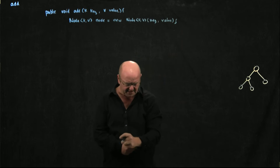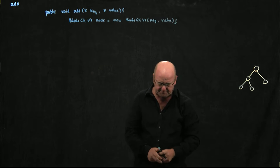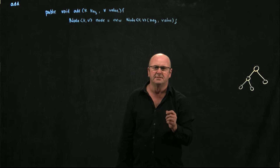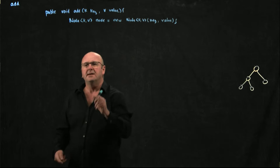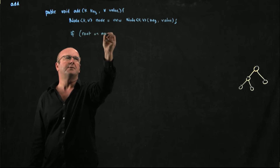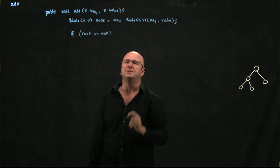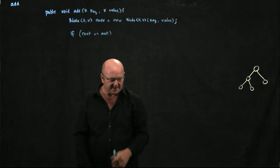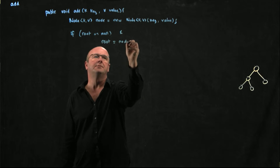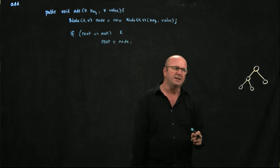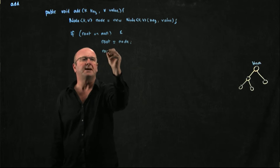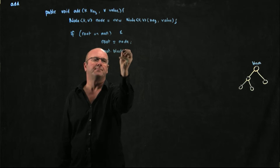Now we've stored our key and value. The very first thing we need to do when we add something to a data structure is look and see — is that data structure empty? In our case, if root is equal to null, we're going to set root equal to this new node, increment our size counter, and we're done. Remember, one of the rules of the red-black tree is that the root node is always black.